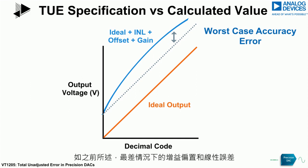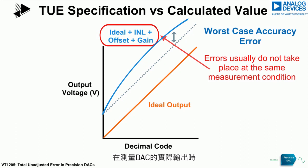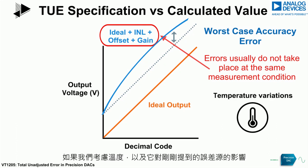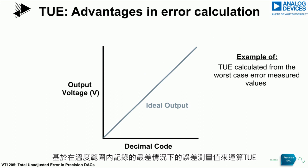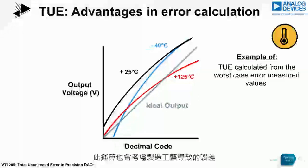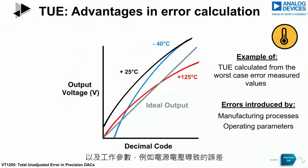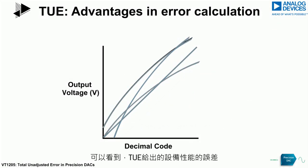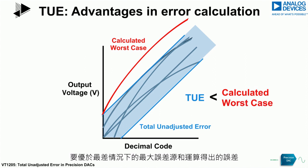As mentioned previously, the worst-case gain, offset, and linearity errors will not usually take place at the same measurement condition. When measuring the actual output from a DAC, if we consider temperature and its effects on the error sources, some may be affected while others may not be. Taking an example where the TUE is calculated from the worst-case error measurement values recorded across temperature, this also takes into account errors introduced by manufacturing process and operating parameters such as supply voltage. TUE gives a far better indication of device performance over taking the worst-case maximum error sources and calculating from these.